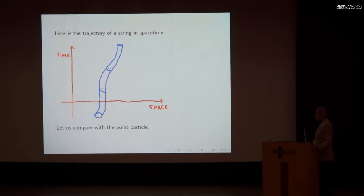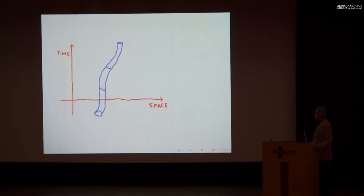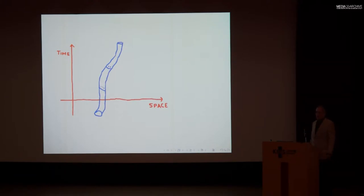Let's compare with the point particle. At each moment in time, the particle is somewhere, and as time goes on, the particle traces out a curve in spacetime. For the string, at each moment in time you have a little loop of string, and as time goes on the loop fills out a tube in spacetime. Both the curve and the tube should really be made fuzzy by quantum uncertainty — but all I can say is go study quantum mechanics at university, and you too will have trouble drawing it, just like I do.